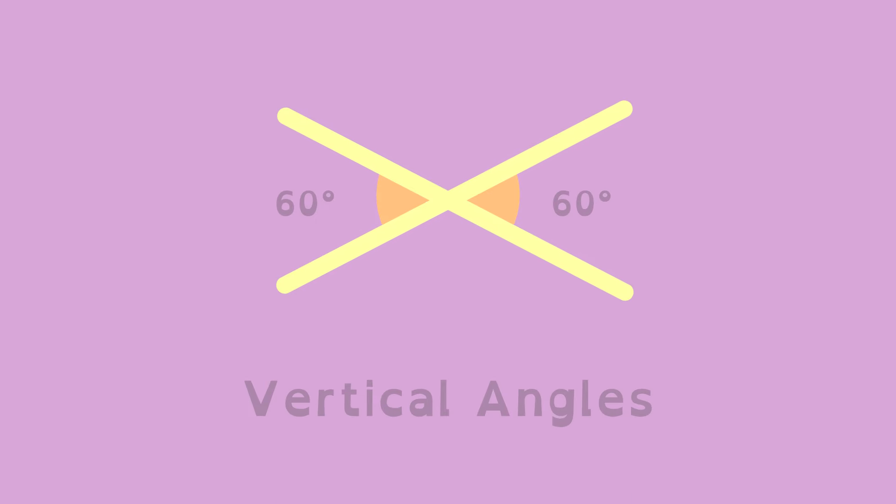Vertical angles are formed when two lines intersect. They are the angles that are not adjacent. They are always equal to each other.